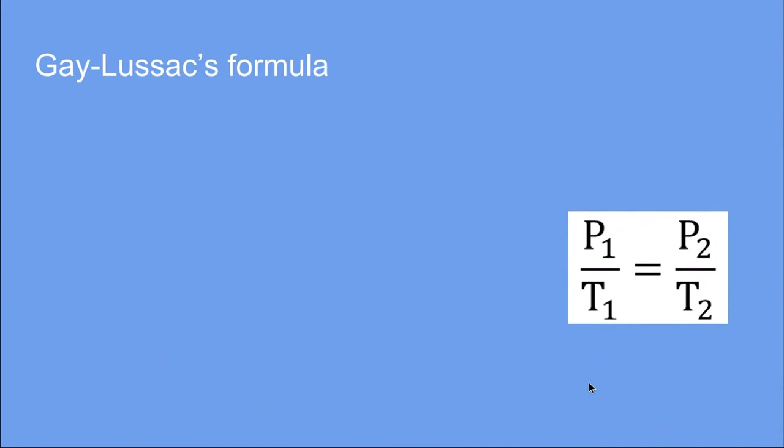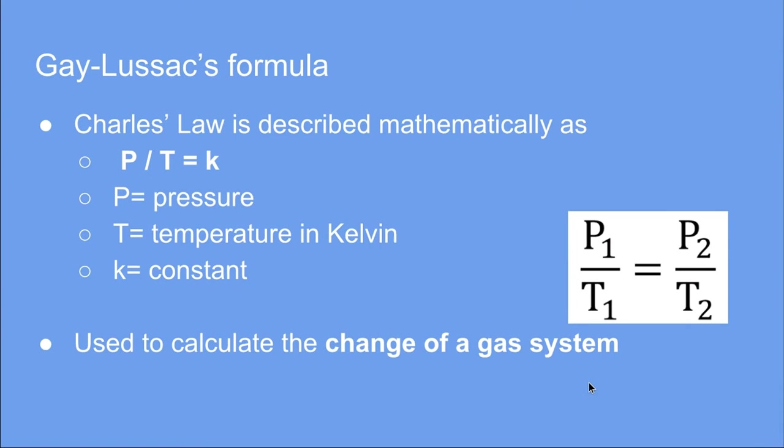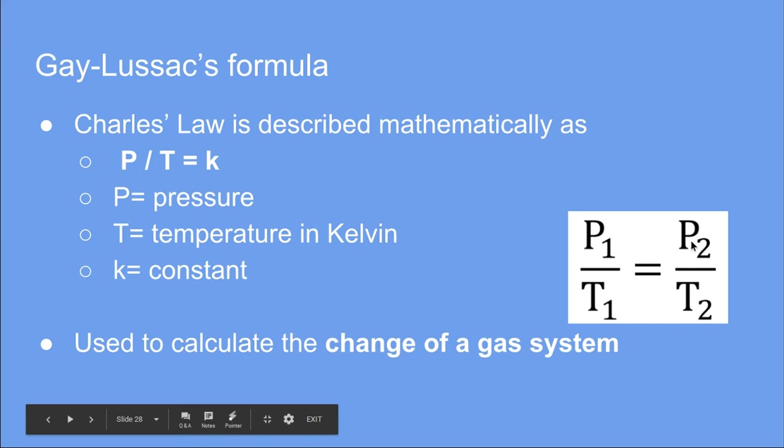Looking at this mathematically, pressure over temperature equals K, my constant. When we link a gas at two different sets of properties, they come out to the same result. Algebraically, we can write P1 divided by T1 equals P2 divided by T2.